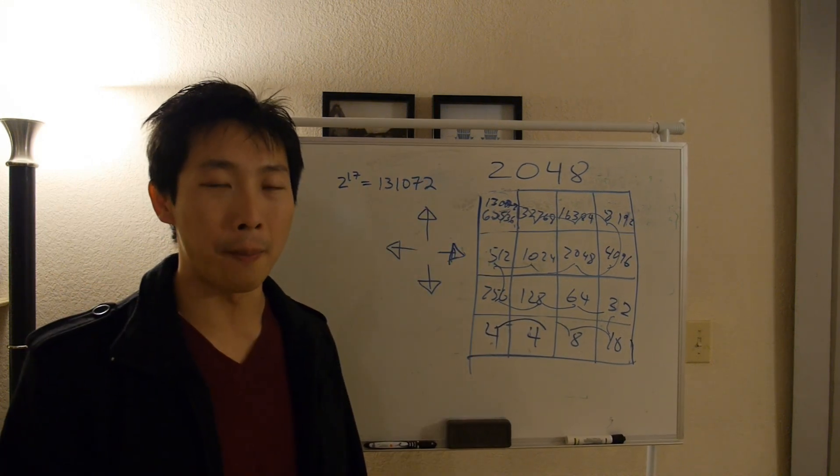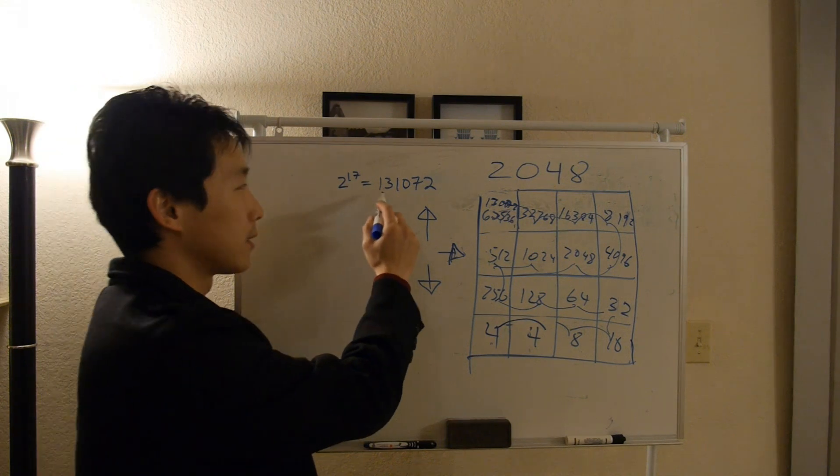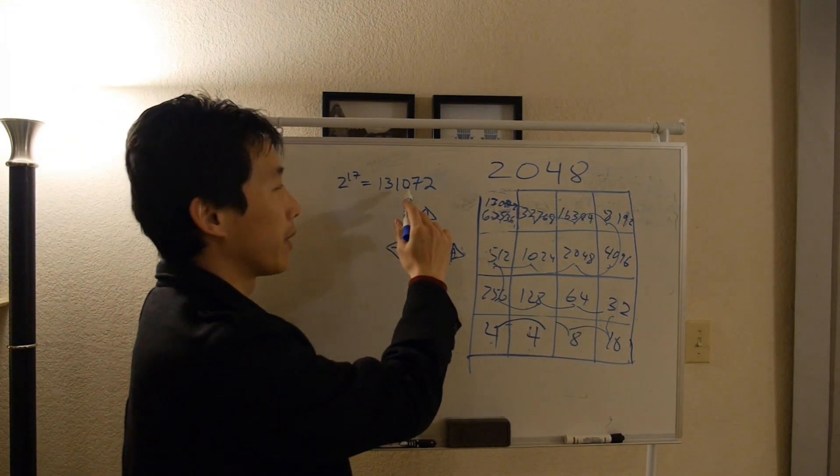So the theoretical maximum tile that you can get is 131,000.